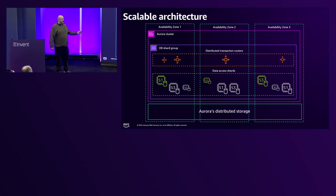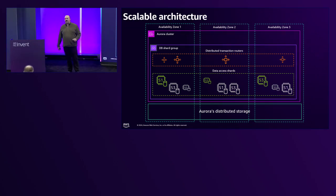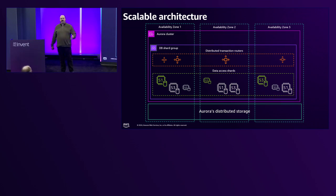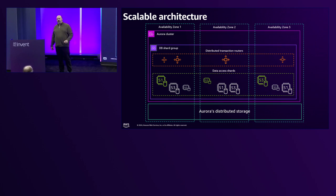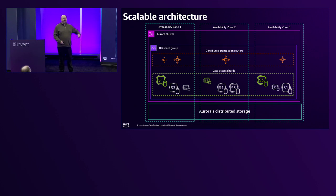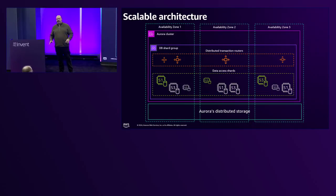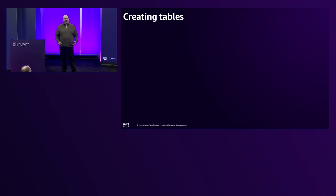We also have compute redundancy two, which gives two failover options. These data access shards own the data for a piece of your database — they receive queries from the routers, manage their own local transactions, execute results, and pass results back through the routers. Our transaction system passes a transaction timestamp from the routers down to all the shards, giving you a consistent snapshot isolation view of all your data — whether it's a single-shard transaction, multi-shard transaction, stored procedure, or function. You get repeatable read snapshot isolation or read committed isolation, the same as in a traditional single-node Postgres system.